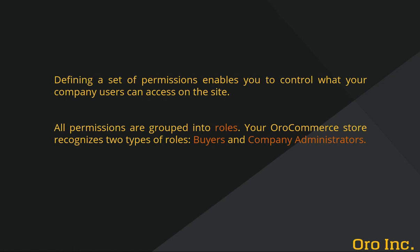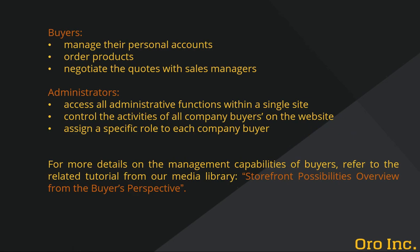All permissions are grouped into roles. By default, your OroCommerce store recognizes two types of roles: buyers and company administrators. Buyers can manage their personal accounts, order products, and negotiate quotes with sales managers, while administrators have the highest level of permissions and can access all administrative functions within a single site. They control the activities of all company buyers and assign specific roles to each of them.